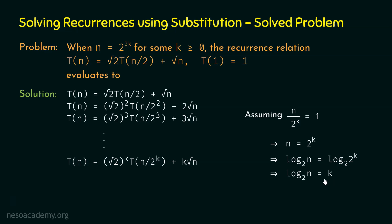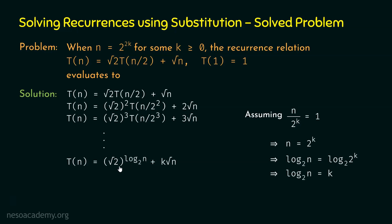Now we replace T(n/2^k) with T(1) = 1, giving T(n) = (√2)^k·1 + k·√n = (√2)^k + k·√n. Substituting k = log₂(n): (√2)^(log₂ n) = n^(log₂ √2). Since log₂(√2) = log₂(2^(1/2)) = (1/2)·log₂(2) = 1/2, this equals n^(1/2) = √n.